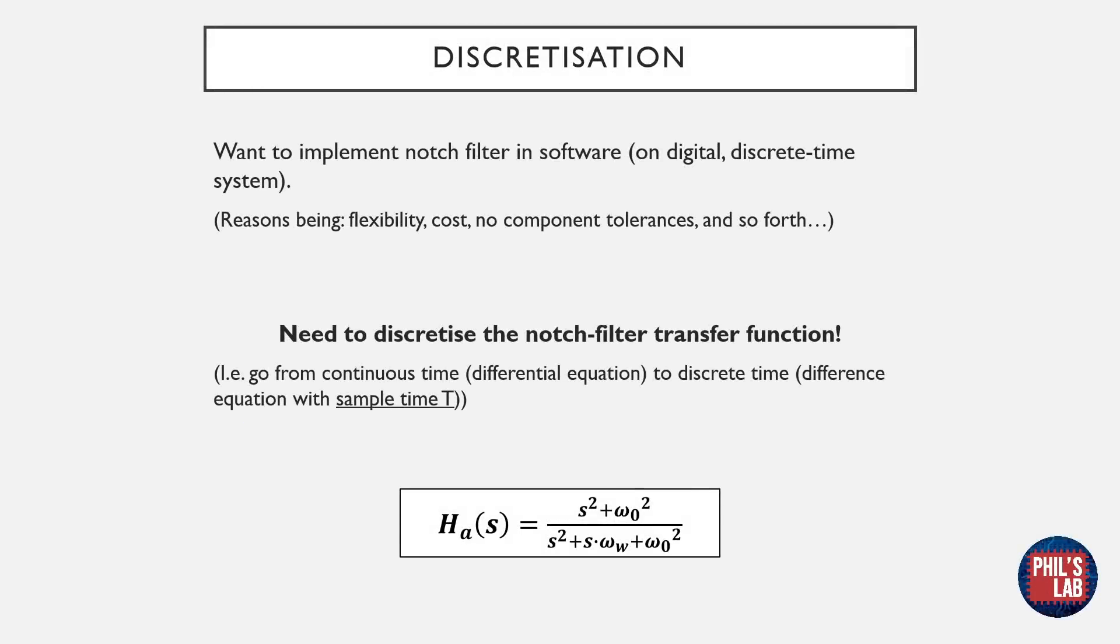Now that we have derived a mathematical model for an analogue continuous time notch filter, we're ready to take the next step. That is, we would like to implement a notch filter in software, on a digital discrete time system. Reasons for this are typically flexibility, meaning we can change filter parameters on the fly, in real time, without redesigning the circuitry, as well as typically lower cost, and no problems with component tolerances and so forth.